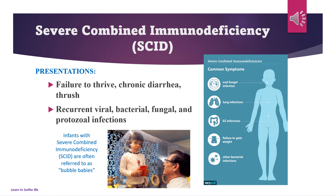Patients with severe combined immunodeficiency tend to have failure to thrive, GI problems like chronic diarrhea, lung issues, oral thrush, and other infections — including recurrent viral, bacterial, fungal, and protozoal infections.